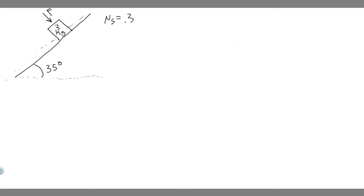The first thing you always do with these problems is draw a free body diagram, because we need to know what forces are acting on it. On the box, straight down, we have the force due to gravity, which is just mg — it goes straight down. We also have a normal force going straight up perpendicular to the box. And we're going to have a frictional force — because the box is going to slide down, friction acts in the opposite direction, so we call it F sub F.